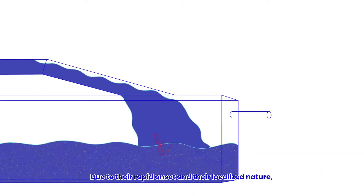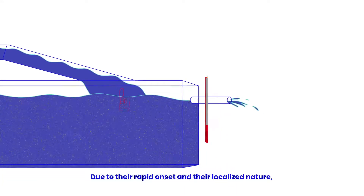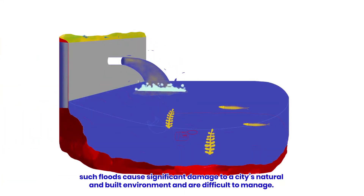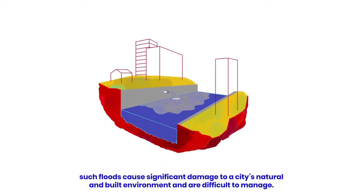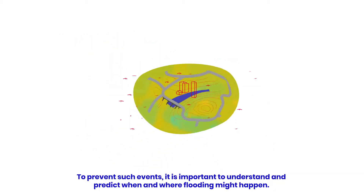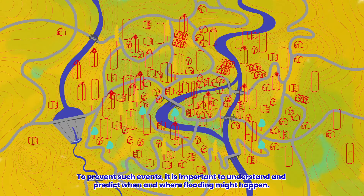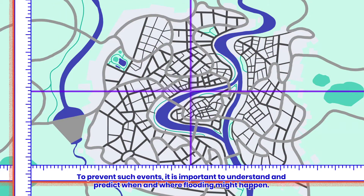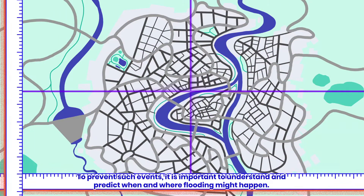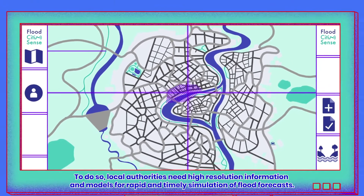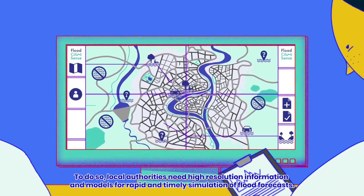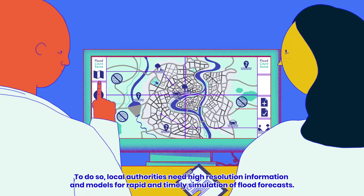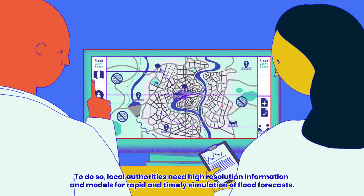Due to their rapid onset and their localized nature, such floods cause significant damage to a city's natural and built environment and are difficult to manage. To prevent such events, it is important to understand and predict when and where flooding might happen. To do so, local authorities need high-resolution information and models for rapid and timely simulation of flood forecasts.